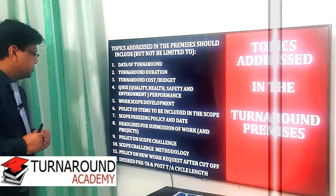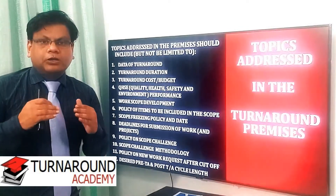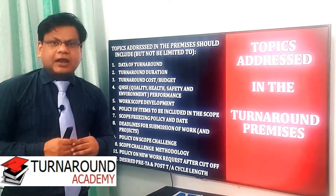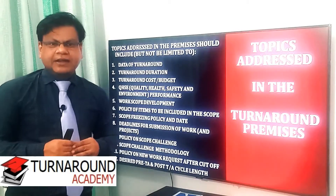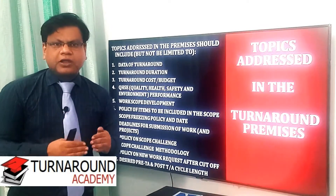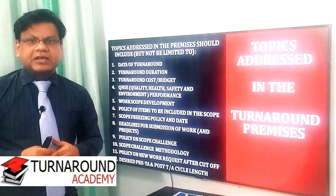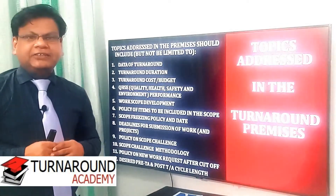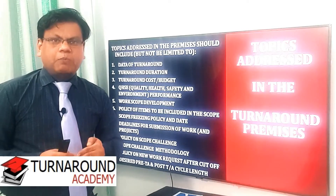Continuing the list of topics in the turnaround premises: number seven, scope freezing policy and date — management will give the scope cutoff date; number eight, deadline for submission of work including projects — management will give a deadline by which all stakeholders must include their scope of work; number nine, policy of scope challenge — management will give guidelines in the turnaround premises; number ten, scope challenge methodology — what methodology to follow while doing the scope challenge, with guidelines provided by management.